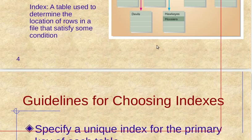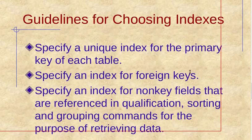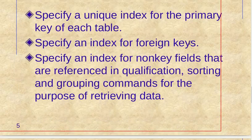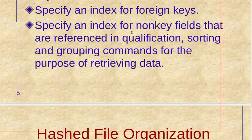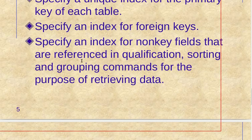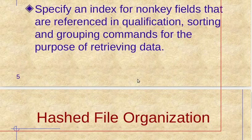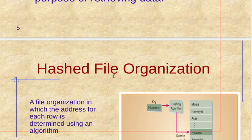An index is a table used to determine the location of rows in a file that satisfy some conditions. If you are confused about how to choose indexes, here are some guidelines: specify a unique index for the primary key of each table, specify an index for foreign keys, and specify an index for non-key fields referenced in qualification, sorting, and grouping commands for retrieving data.